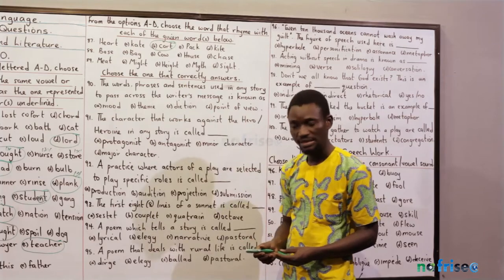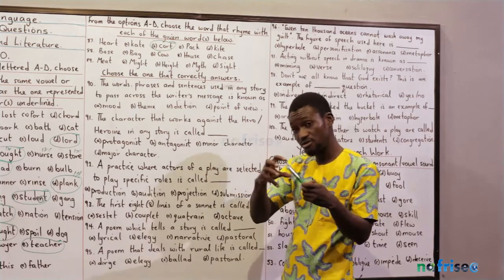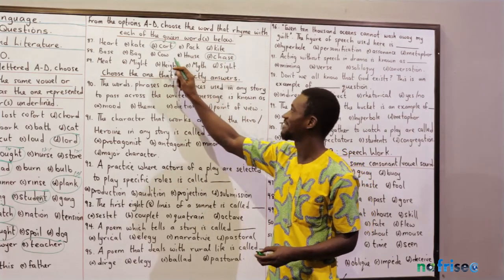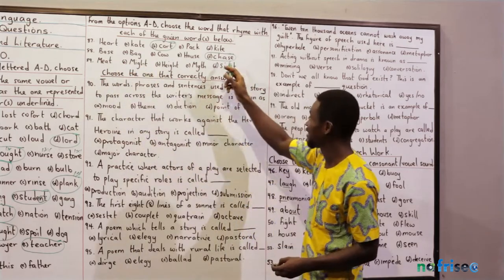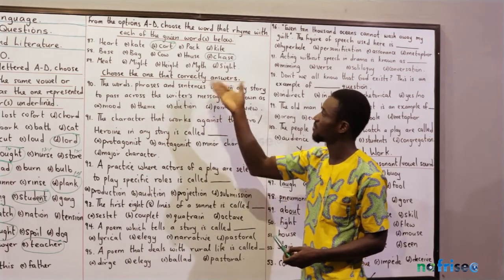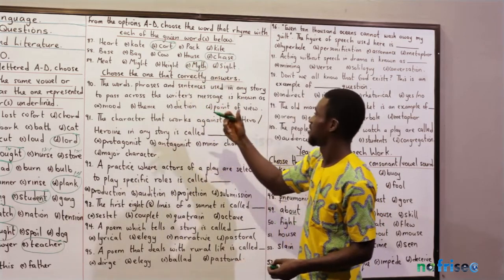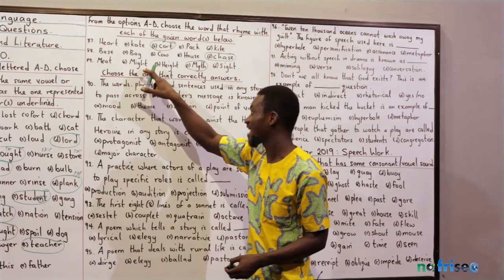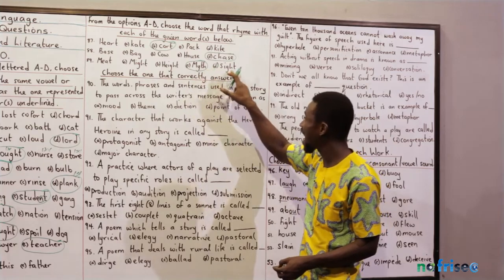Question 88 — 'base.' The /eɪ/ sound. Which option rhymes with it? That's option D — 'chase.' Option A, 'house,' is /aʊ/. Option B is /aʊ/. Option C, 'bag,' is /æ/. Question 89 — 'meet.' Which option rhymes with 'meet'? That's option C — 'meet.' Option A, 'sight,' is /aɪ/. Option B, 'eight,' is /eɪ/. Option D is /aɪ/. Only the matching word has the same /iːt/ sound.